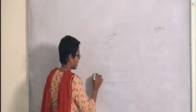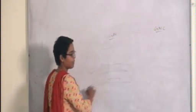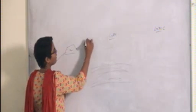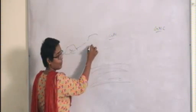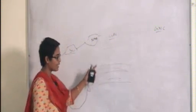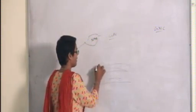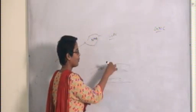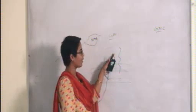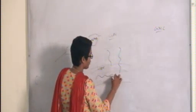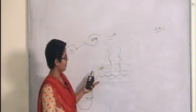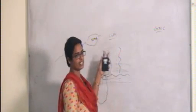Gram positive cell wall has a thick peptidoglycan layer. This peptidoglycan layer is made up of cross linkages between NAG (N-acetyl glucosamine) and NAM (N-acetyl muramic acid). In the peptidoglycan you will have lipoproteins and a teichoic acid component. Teichoic acid is divided into wall teichoic acid and lipoteichoic acid — these are the two components.